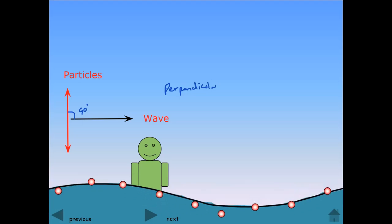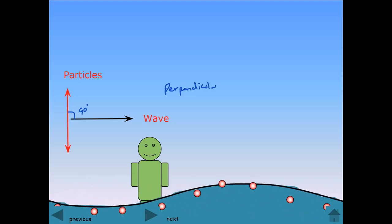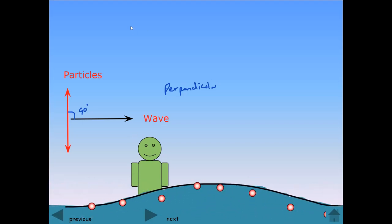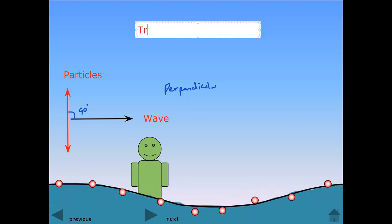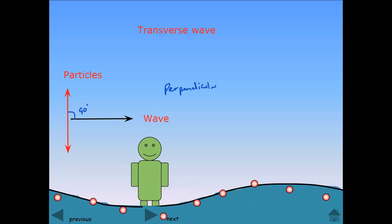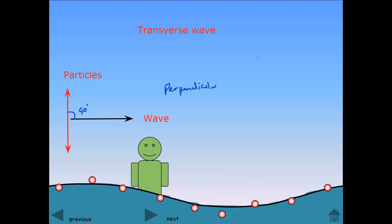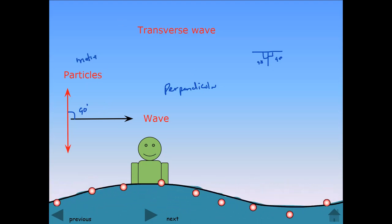The wave in which the particle vibrates or moves perpendicular to the direction of the wave is known as a transverse wave. It is easy to remember this term — when you write the letter T, both angles in the letter T are 90 degrees. So the wave in which the angle between the particle motion and the direction of the wave is 90 degrees, we call that a transverse wave.